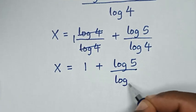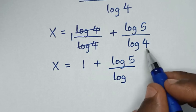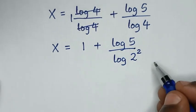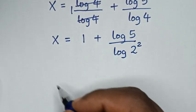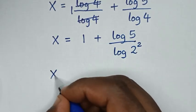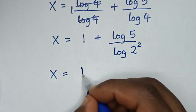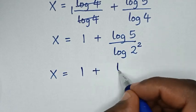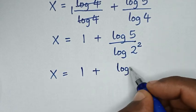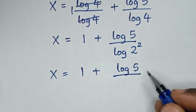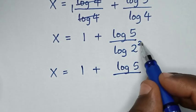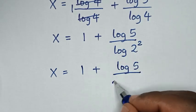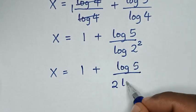Log of 4 is the same as log of 2 squared. In the next step, this power of 2 will move to the base, so it will be 2 times log of 2. So x is equal to 1 plus log of 5 over 2 times log of 2.